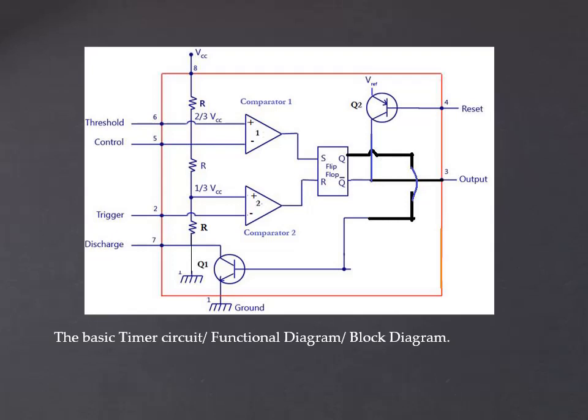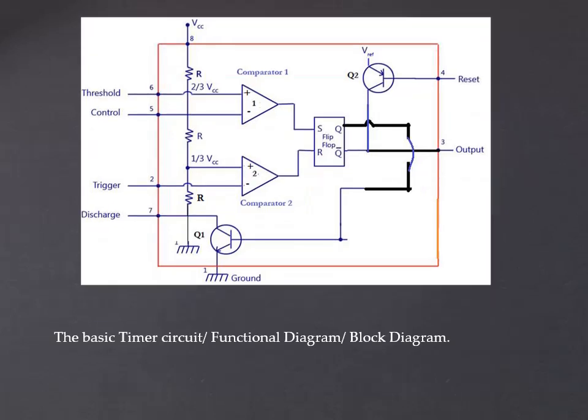Because of the voltage divider network consisting of three resistors, the voltage at the non-inverting input terminal of comparator 2 is fixed to VCC by 3, and the voltage at the inverting terminal of comparator 1 is fixed to 2 by 3 VCC. The voltage at this particular point is VCC and here it is connected to ground.